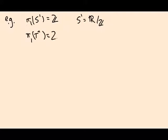So for example, this tells you π₁ of the circle is Z because, as we've seen, S¹ is R¹/Z. It tells you π₁ of the torus is Z to the n because the torus is R^n over Z to the n.